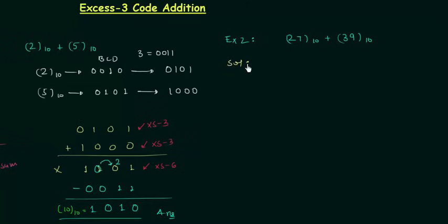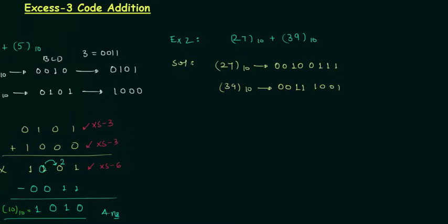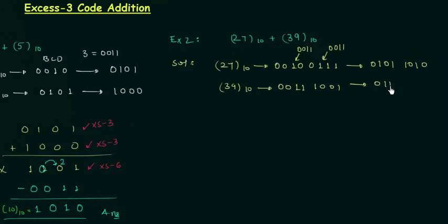First we will find the equivalent BCD codes for 27 and 39. For 27, the BCD code is 0010 for the digit 2, and 0111 for the digit 7. For 39, we have 0011 for the digit 3 and 1001 for the digit 9. So these are the BCD codes for 27 and 39. Now we will add 3 to each of these groups to obtain the XS3 codes.